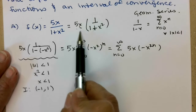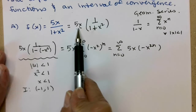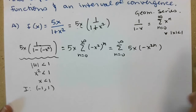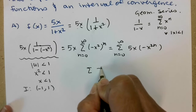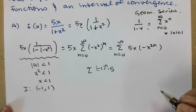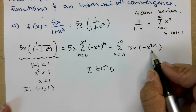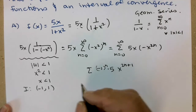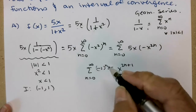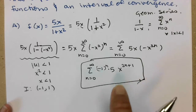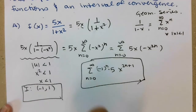Having that 5x on the outside — that was property 2 — it doesn't change your interval of convergence. It only changes if there's a coefficient on the inside with n. The negative sign makes it an alternating series, so I'll bring the negative 1 to the n out. Then I have my 5 tagging along, times x to the 2n times x, giving x to the 2n plus 1, from 0 to infinity. There are different ways you could write that, but that is the power series, and the interval of convergence is negative 1 to 1.